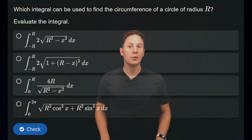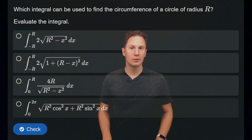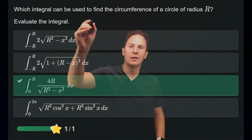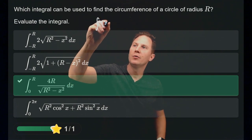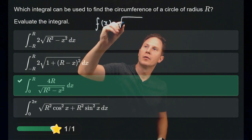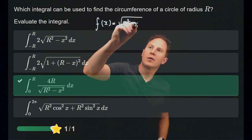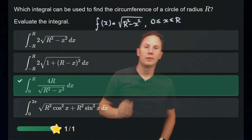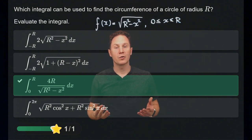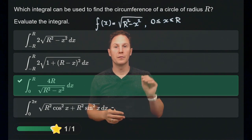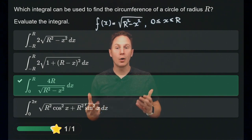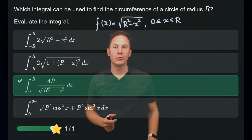Which integral can be used to find the circumference of a circle of radius r? To find the circumference, we use the function f(x) = √(r² − x²). Letting x vary between 0 and r, the graph of that function is the quarter circle of radius r centered at the origin in the first quadrant of the xy-plane. Therefore the arc length of that quarter is one quarter of the total circumference.